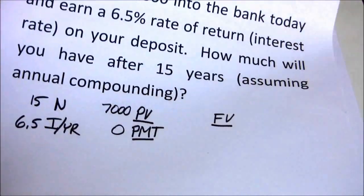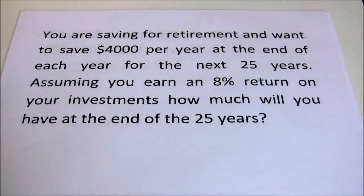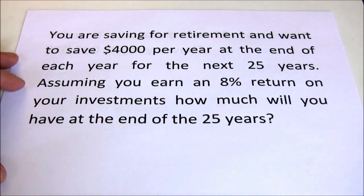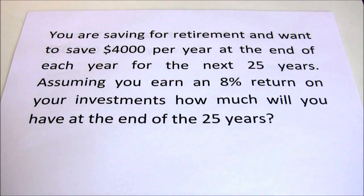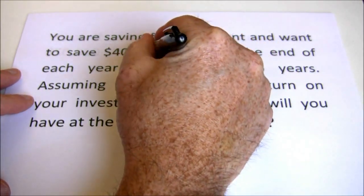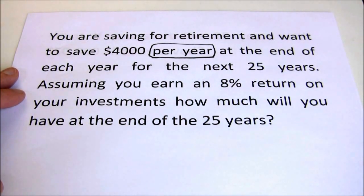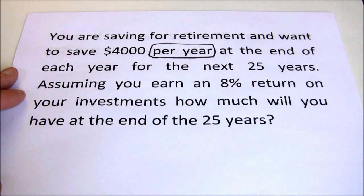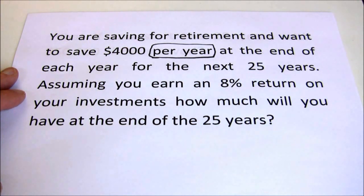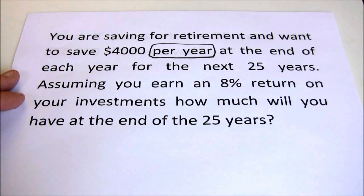Now let's go to another example where we introduce the annuity stream. You're saving for retirement and want to save $4,000 per year at the end of each year. The key signal for an annuity is 'per year' or 'every year' or 'each month' — any phrase indicating the same cash flow every period for a fixed number of periods. So $4,000 per year tells us we're dealing with an annuity and we'll have a PMT value this time.